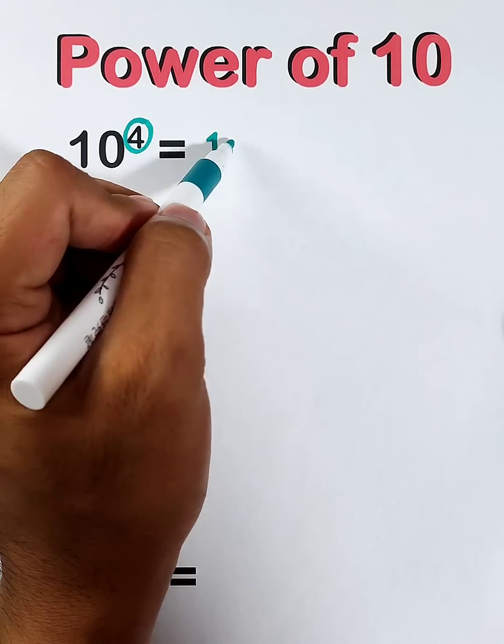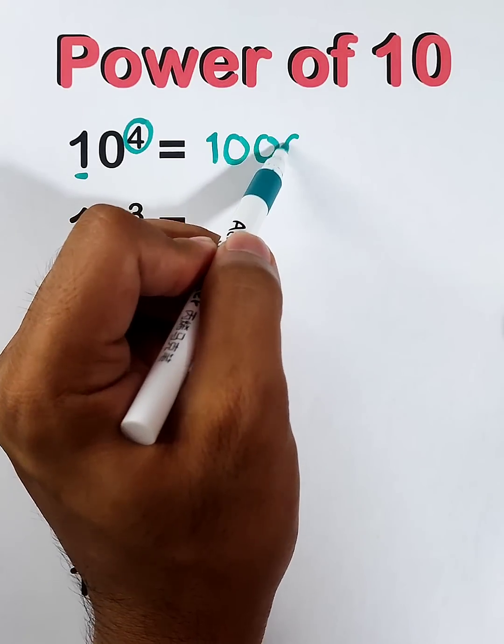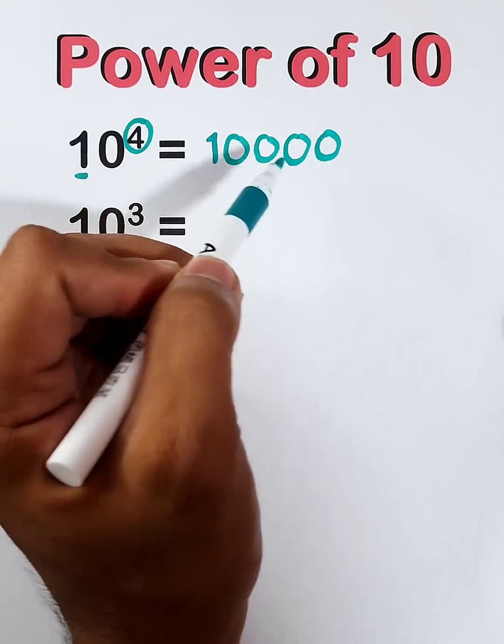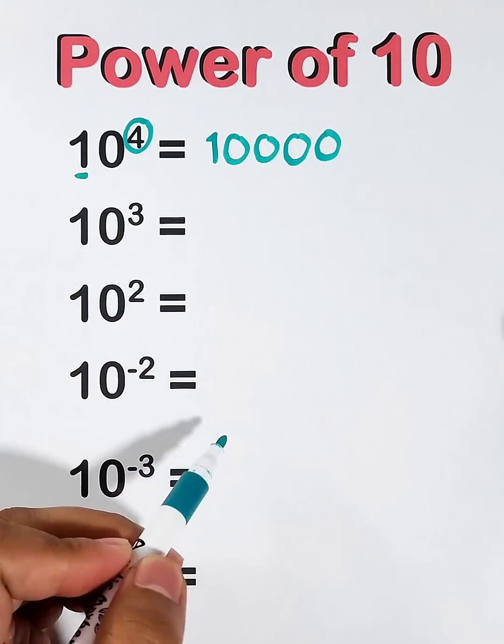So we have 4 as exponents, so we need to put 1, 2, 3, and 4. And 10,000 is the simplified form of 10 raised to the fourth power.